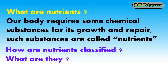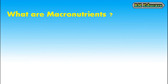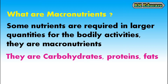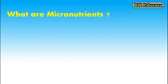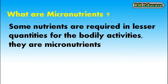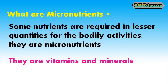Nutrients are classified as micro and macronutrients. What are macronutrients? Some nutrients are required in larger quantities for the bodily activities — they are called macronutrients. Carbohydrates, proteins and fats are macronutrients. What are micronutrients? Some nutrients are required in lesser quantities for the bodily activities — they are called micronutrients. Vitamins and minerals are micronutrients.